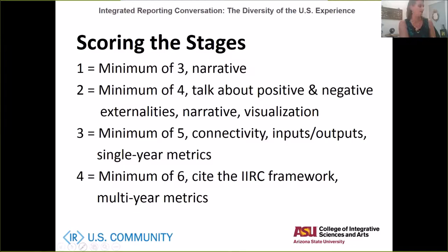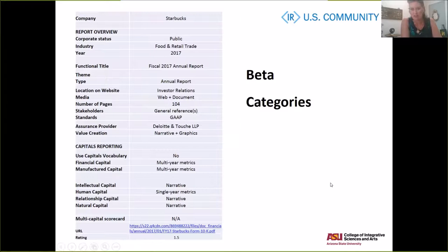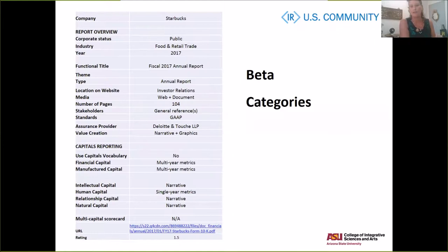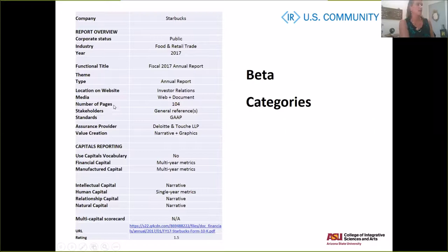Here's an example of what the database looks like. Mary had gotten it going with some sample reports like Clorox, and I gave my students that database to fill in with their chosen company. This example is one a student did for Starbucks. Most companies they chose were publicly traded, which is the goal for the beta version. The database captures industry type, year of the report, functional title, whether it has a branding theme, where it's located on the company's website, whether it comes in hardcopy or electronic form, the number of pages, and how it discusses stakeholders.